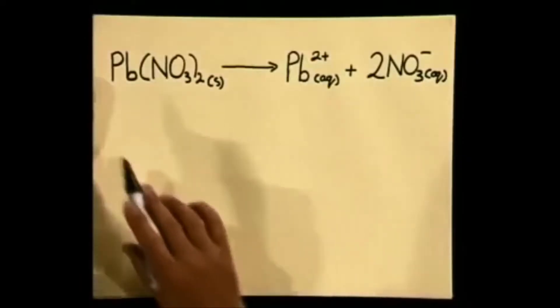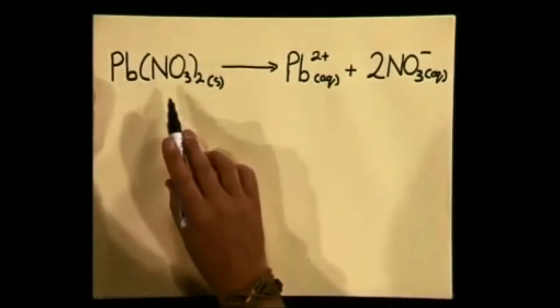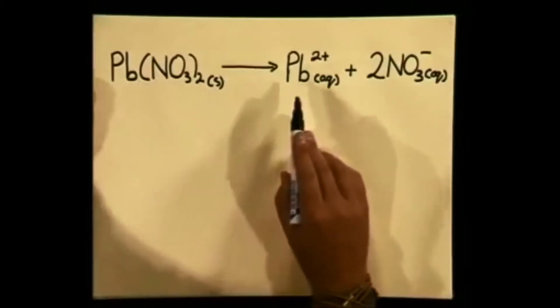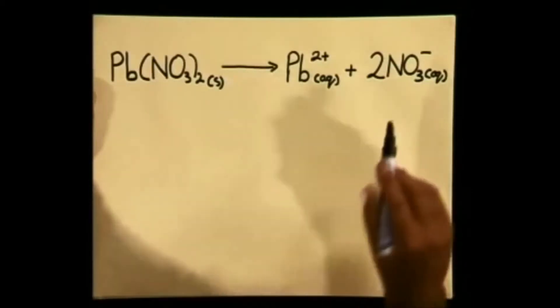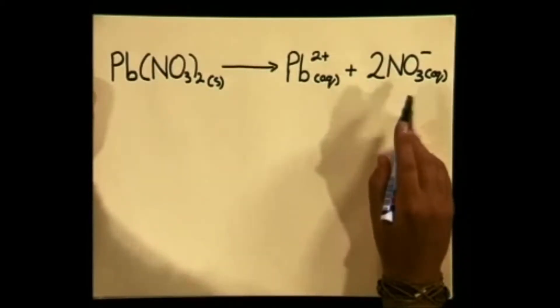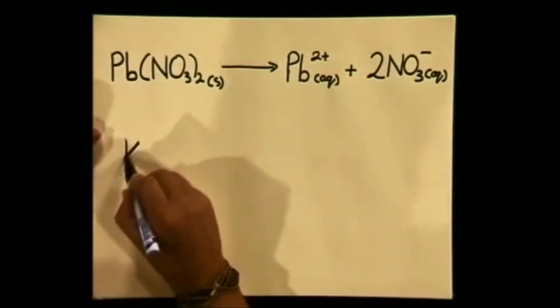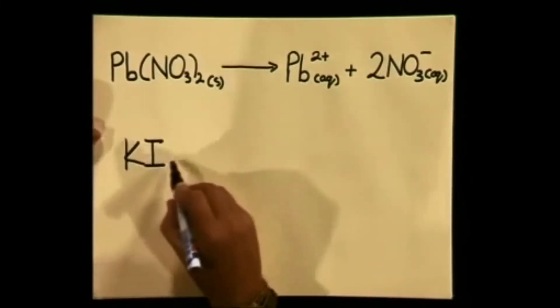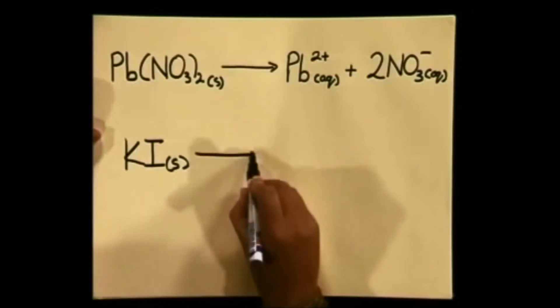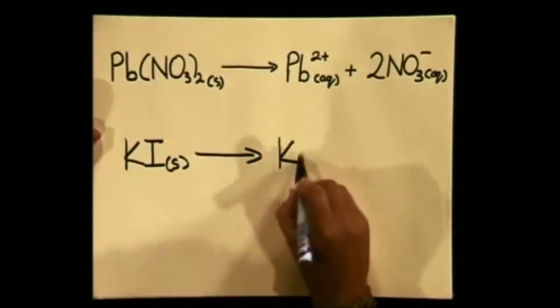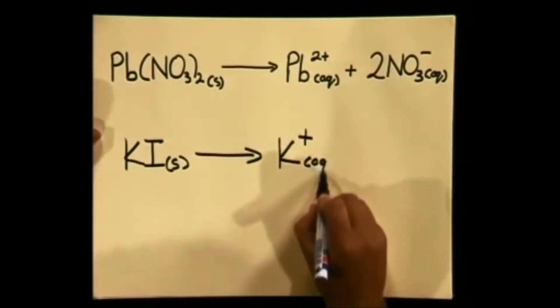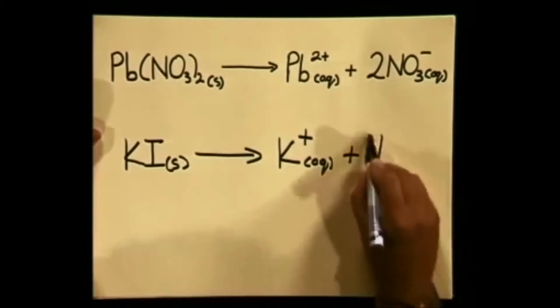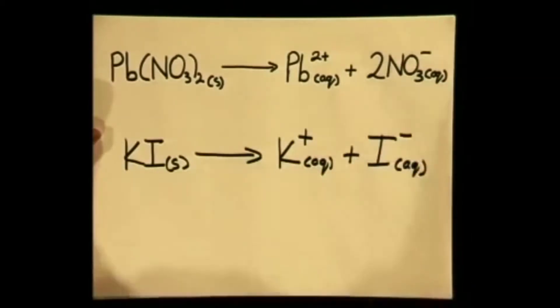Before we continue with this experiment, I would like to write down the ionic equations to show you the dissociation of these salts in water. Here is our first dissociation equation. Lead nitrate, Pb(NO3)2, will dissociate to form Pb²⁺ ions and NO3⁻ ions. Now the potassium iodide, KI, will also dissociate to form K⁺ ions in aqueous solution and I⁻ ions also in aqueous solution.